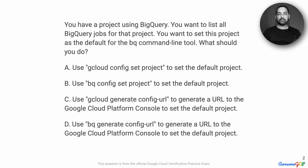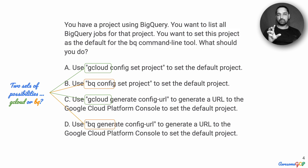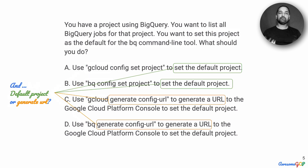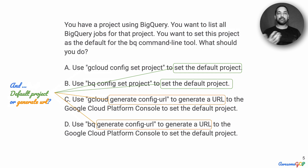The key part of this question is simply about setting the default project that will be used by the BQ command line tool. Now let's look at each of the options. We can see that there are two sets of possibilities: one around gcloud and one using the BigQuery command line group bq. Is there a way we can eliminate one of these options? The other group is to set the default project using either gcloud or bq, or to use generate config URL using either tool.